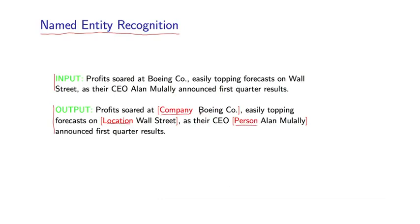In this output, we've identified 'Boeing CO' as a company, 'Wall Street' as a location, and 'Alan Mulally' as a person. The basic problem is to take a sentence as input and mark up all the entities in that sentence. At first glance, this doesn't look like a tagging problem, because a tagging problem assigns a tag to each word. Here we really have a segmentation, an identification of sub-segments of the sentence.